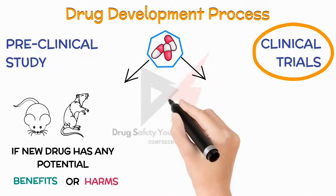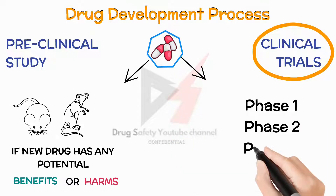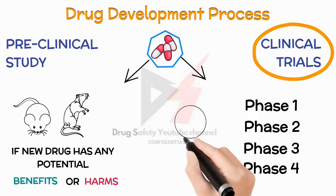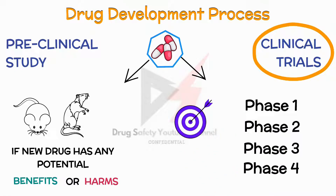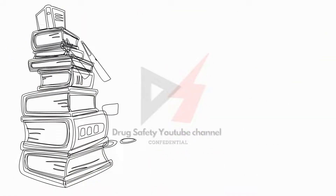Clinical trials are divided into different phases — Phase 1, Phase 2, Phase 3, and Phase 4. Each phase has its own purpose and involves different numbers of people. That's the quick background for today's topic.